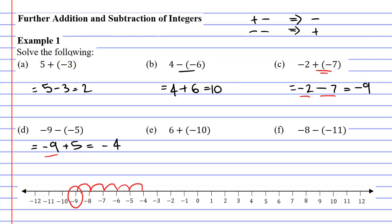Now moving on to question E, we have a plus and minus sign next to each other. This makes a single minus sign, so it's six minus ten.